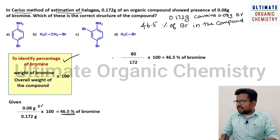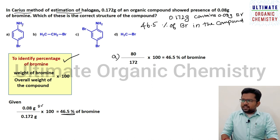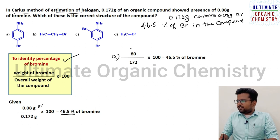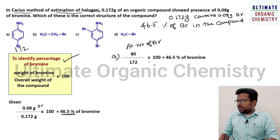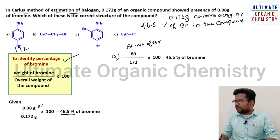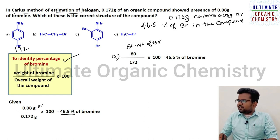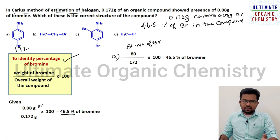Let us check option A, which is 4-bromoaniline. Using the same formula: weight of bromine is 80 (atomic weight), overall molecular weight of this compound is 172. So 80 divided by 172 multiplied by 100 gives 46.5% bromine. This exactly matches the value calculated from the question, so option A is the answer.